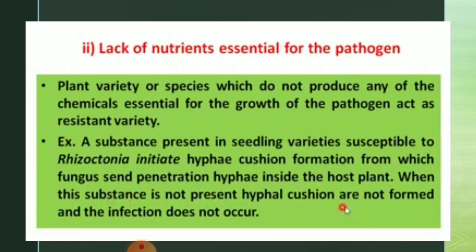For example, a substance present in susceptible seedling varieties initiates hyphal cushion formation in Rhizoctonia, from which the fungus develops penetration hyphae inside the host plant. When this substance is not present, hyphal cushions are not formed and infection does not occur.